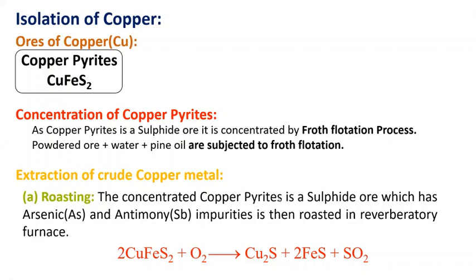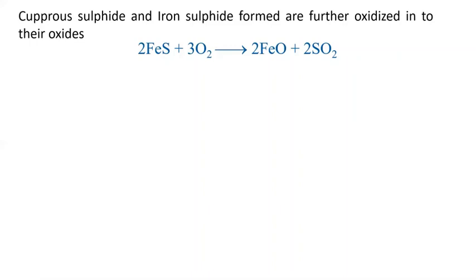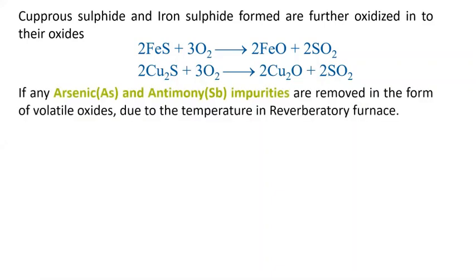Sulfur dioxide is a gas that is left out. The cuprous sulfide and ferrous sulfide formed are further oxidized: ferrous sulfide is roasted to produce ferrous oxide and sulfur dioxide; cuprous sulfide is oxidized to produce cuprous oxide and sulfur dioxide. Any arsenic and antimony impurities present are converted into their volatile oxides and removed.